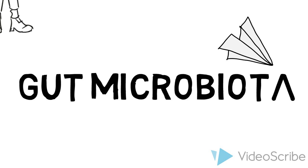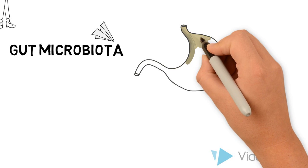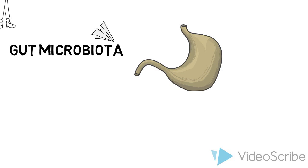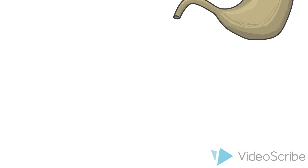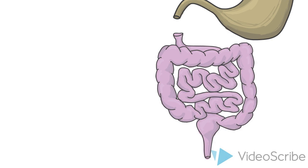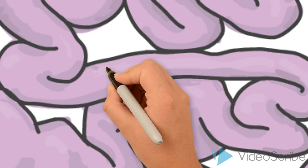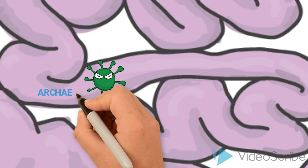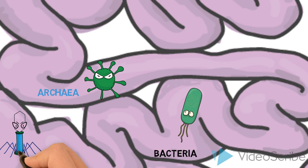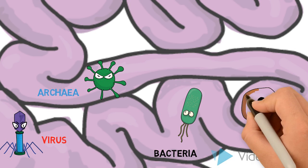Gut microbiota refers to the community of microorganisms that live in our intestinal tract. As we follow this tract from the stomach to the colon, the number and diversity of microbes increases. In total, there are approximately 100 trillion microbial cells and 1,000 microbial species in our gut.